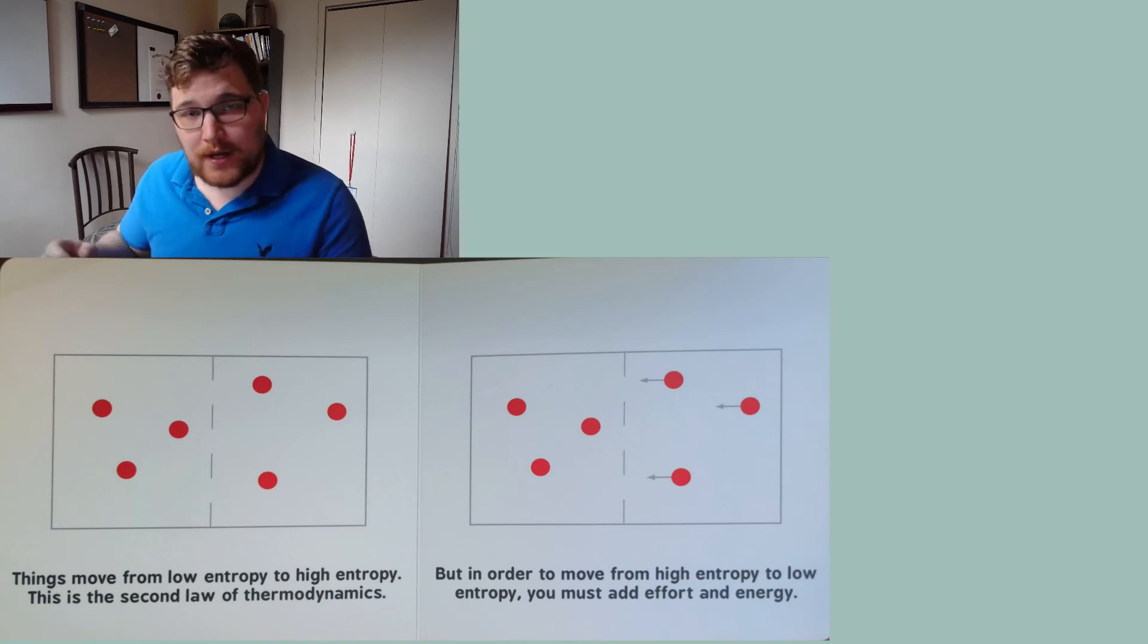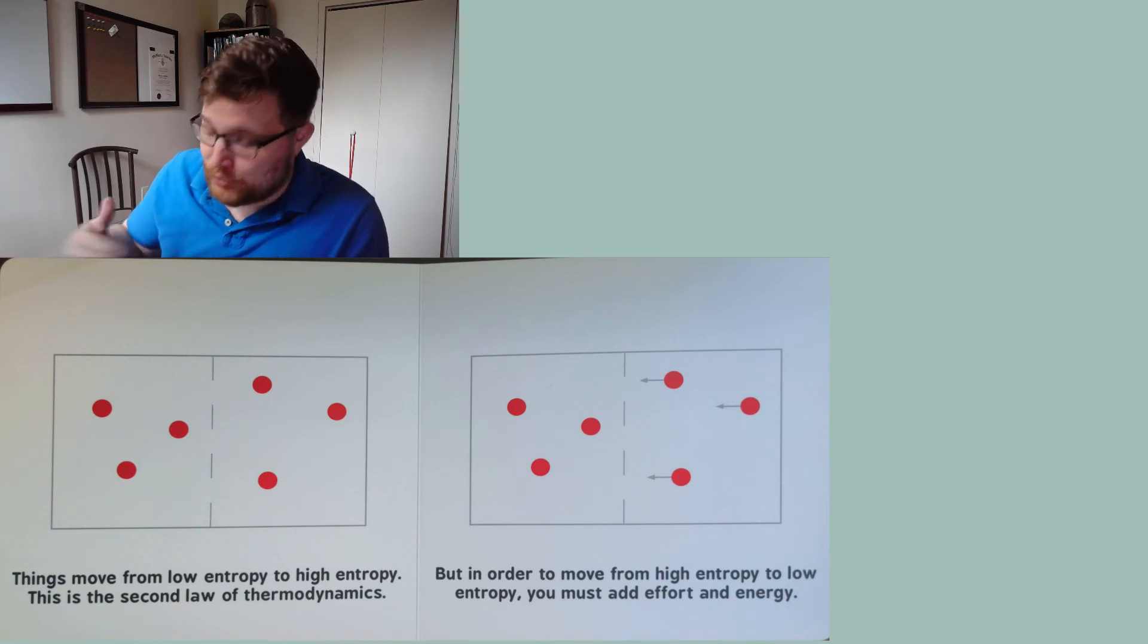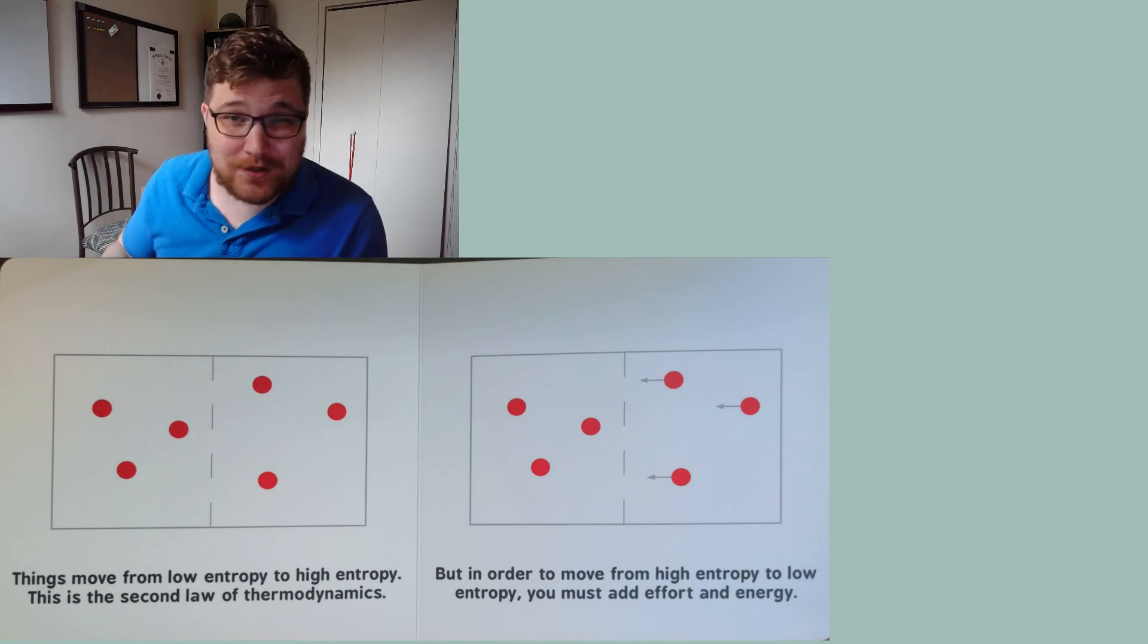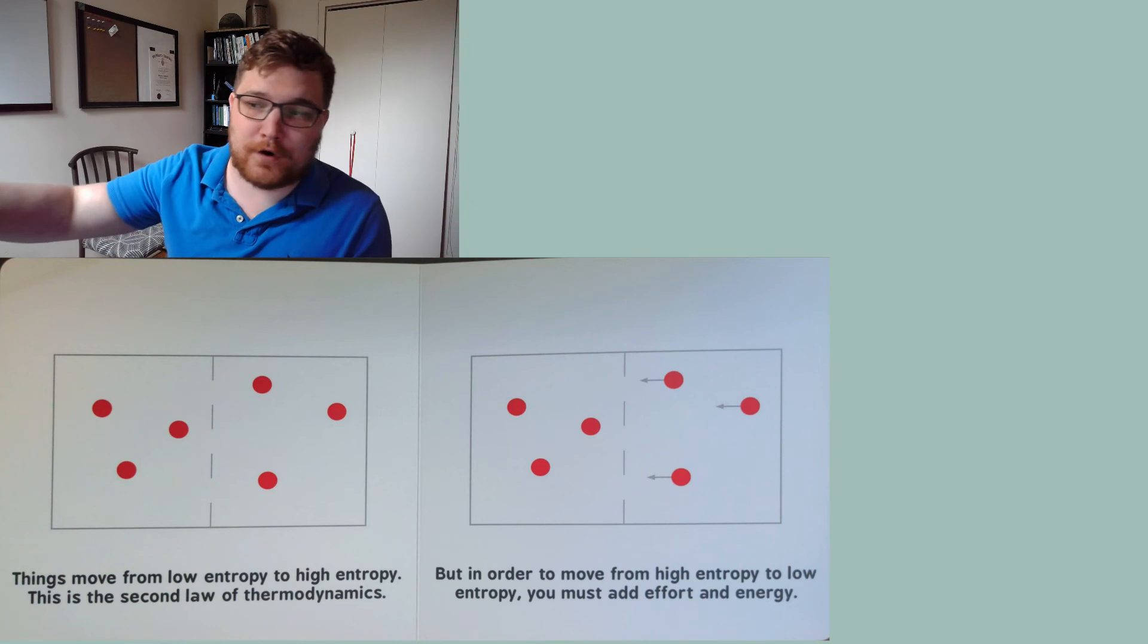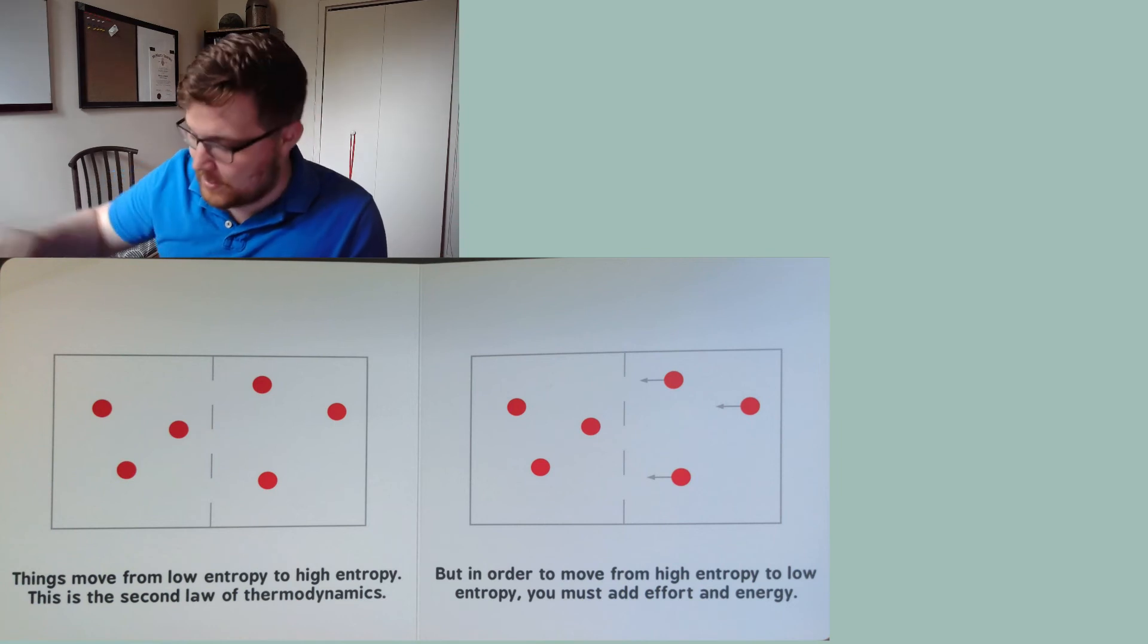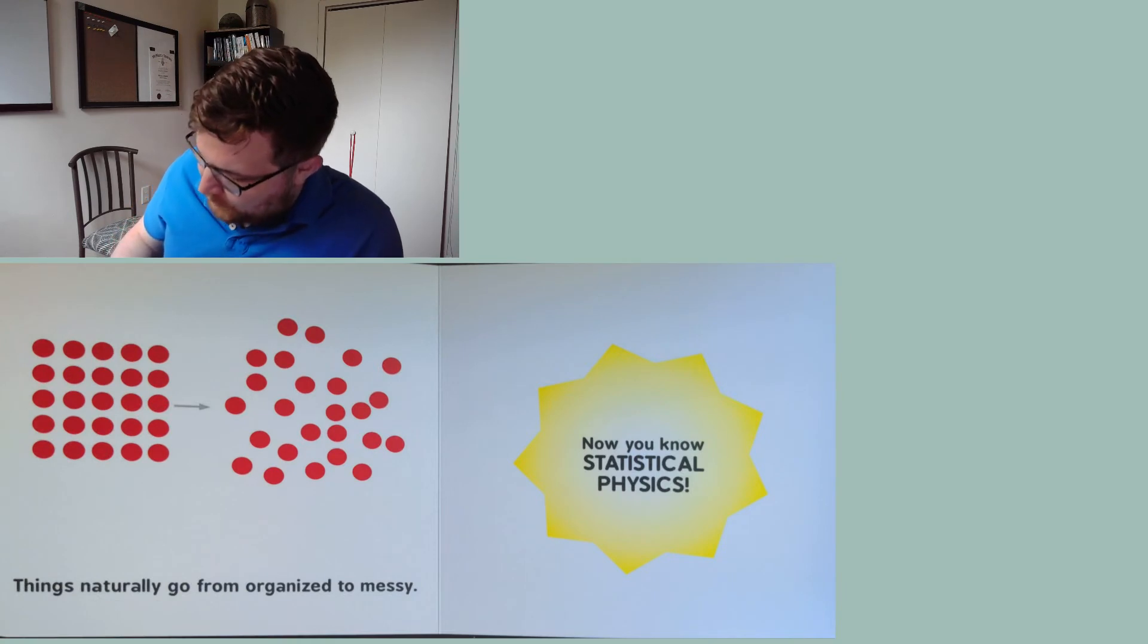Now interestingly if we wait long enough, eventually the math tells us this, our particles will return arbitrarily close to their initial condition. So wherever they started, all on the left hand side, so things can flow to lower entropy. But as you add in more particles, you can probably imagine six is a very small amount of particles, as you add in more and more particles, the time it takes for such a process to occur gets pushed farther and farther away in time. So we don't have to really worry about that for all intents and purposes. Things naturally go from organized to messy.